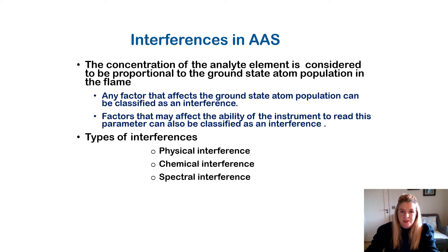This section looks at the interferences that occur when using an AAS, and there are different types of interferences. The concentration of the analyte element is considered to be proportional to the ground state atom population in the flame. Any factor that affects the ground state atom population, or the ability of the instrument to reach this parameter, can be classified as an interference. The three common types of interference in AAS are physical interference, chemical interference, and spectral interference.